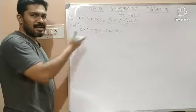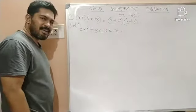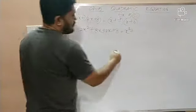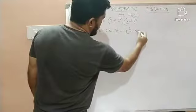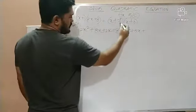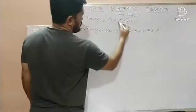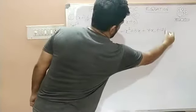Let us open the bracket on the right hand side also. So children, x into x is x² plus x into 3 is 3x plus 7 into x is 7x plus 7 into 3 is 21.